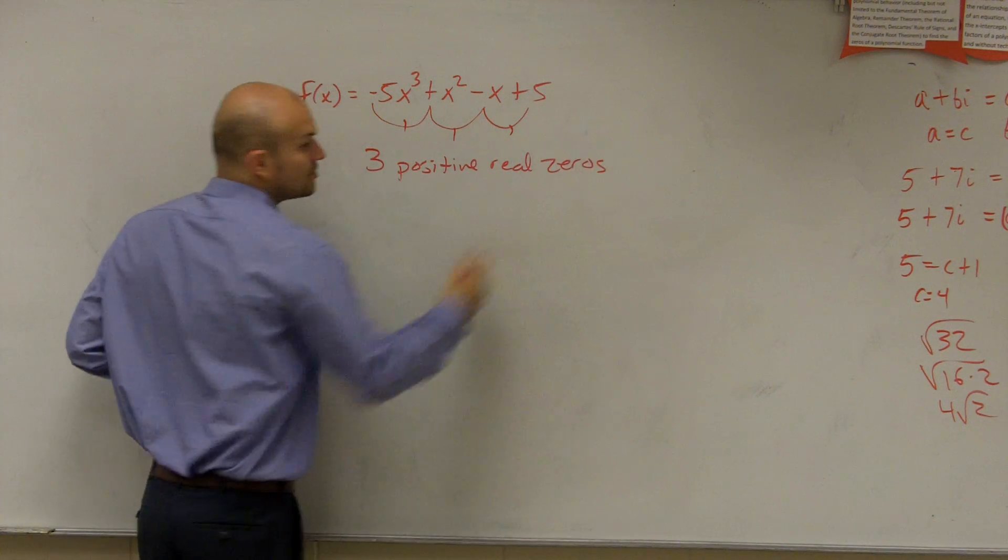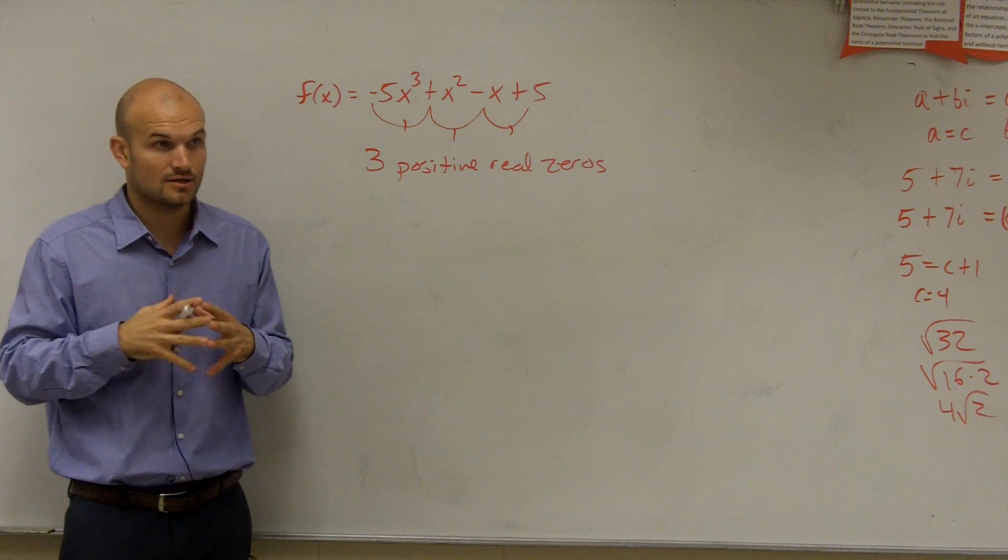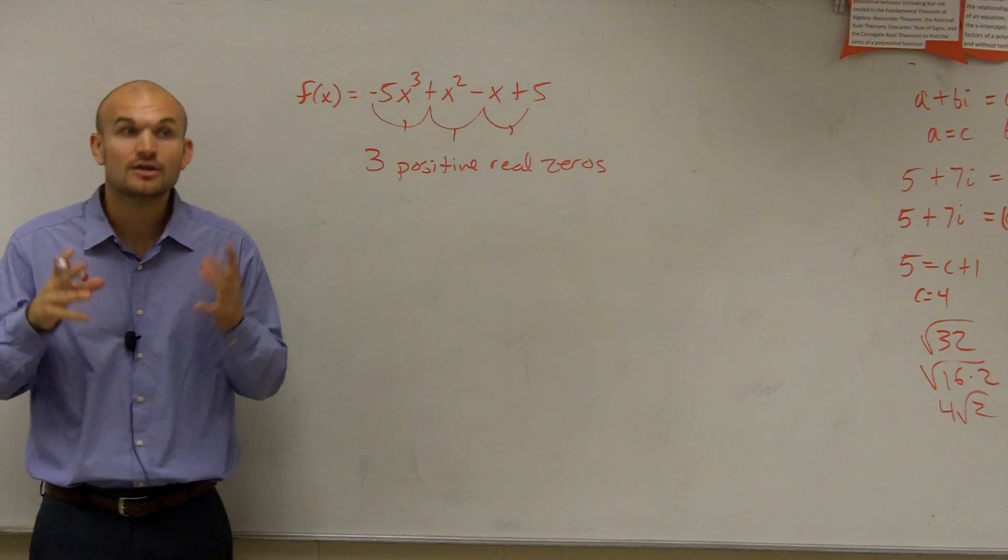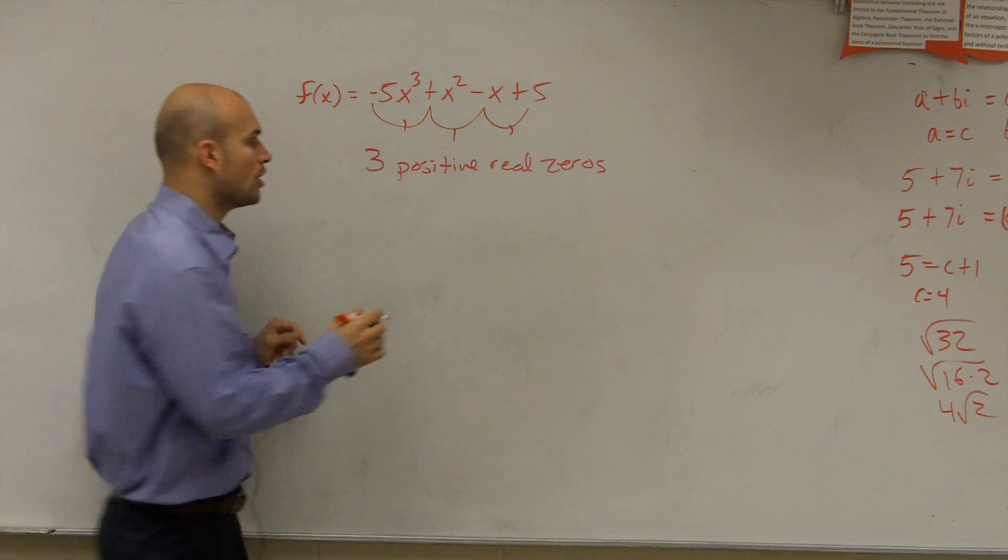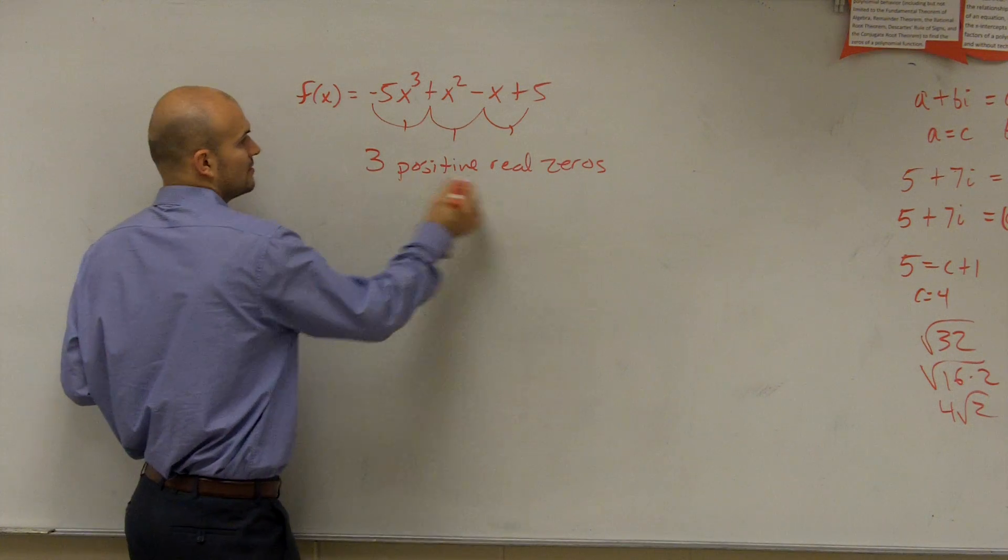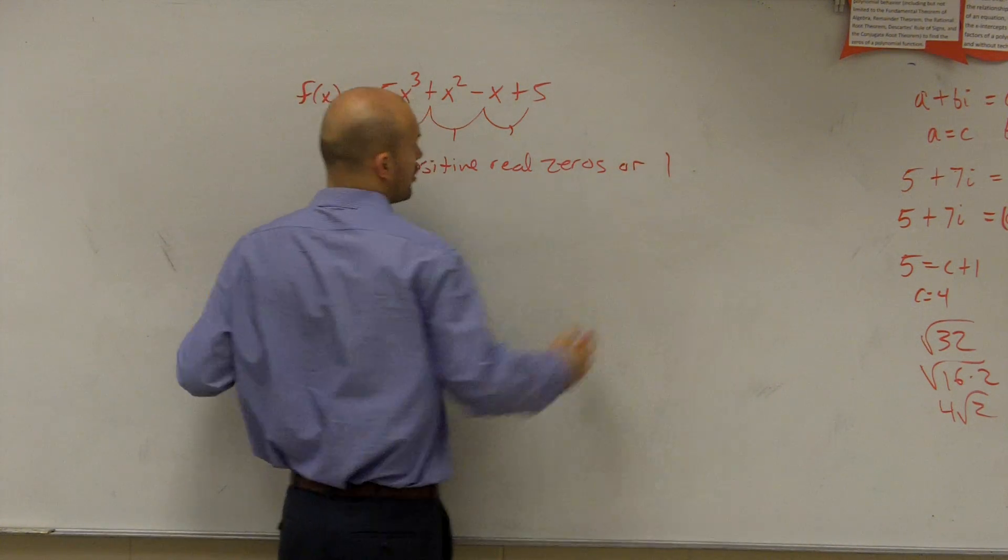Now remember, this is only talking about real zeros. Real zeros, not imaginary, real. So therefore, I have three positive real zeros, or minus that by an even integer, or 1.